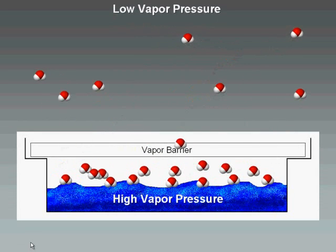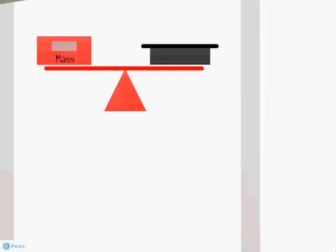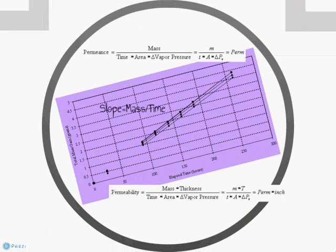Tracking this change in mass over time through periodic weighings gives the water vapor transmission rate, or the slope of a graph of mass over time. Permeance is calculated as this slope divided by the exposed area of the material, divided by the vapor pressure difference.